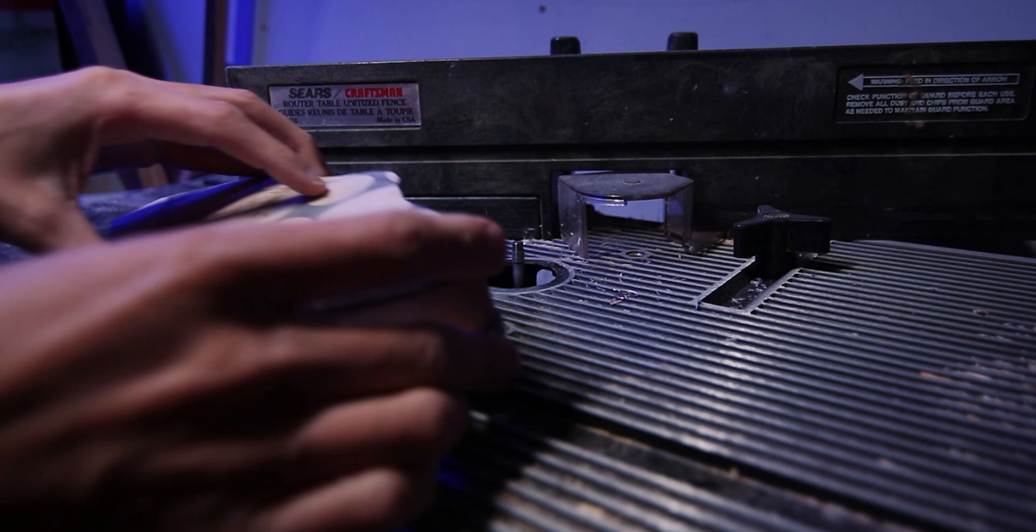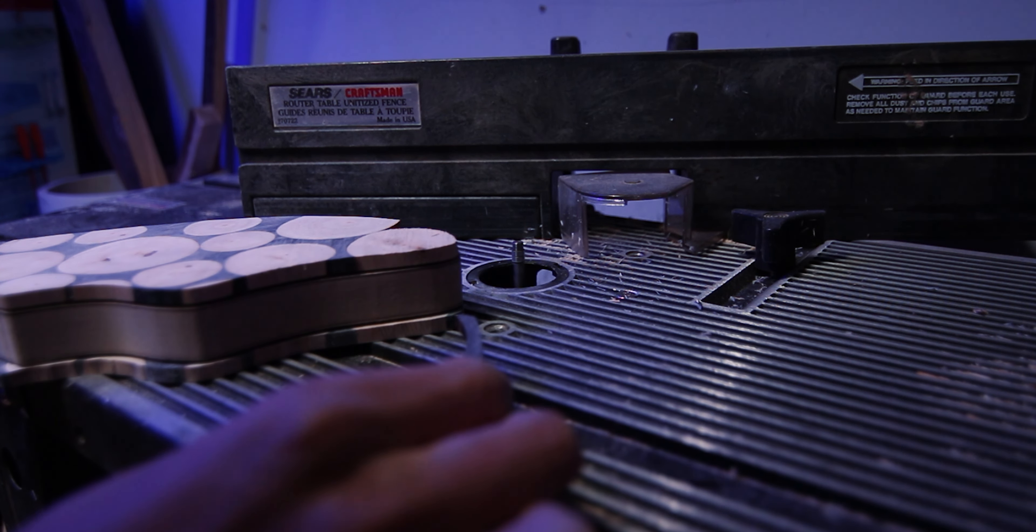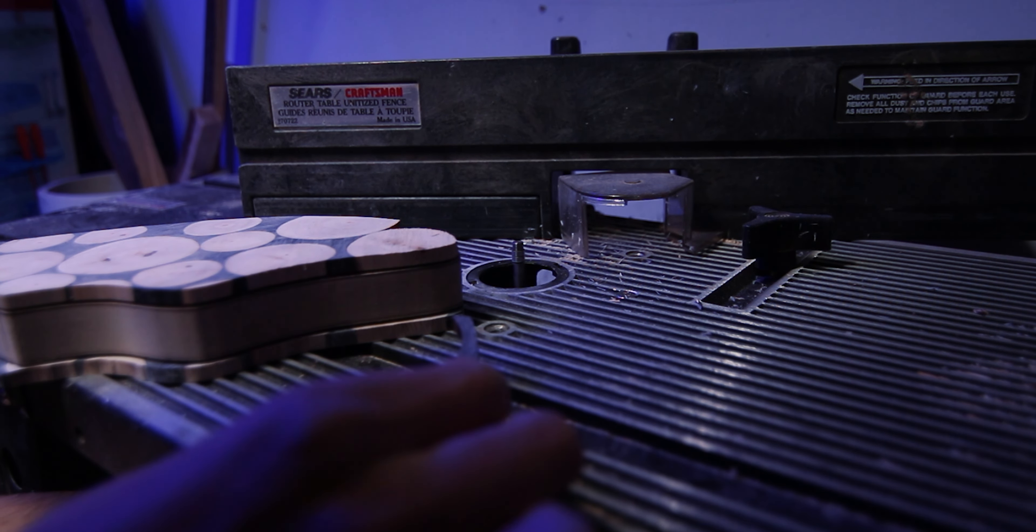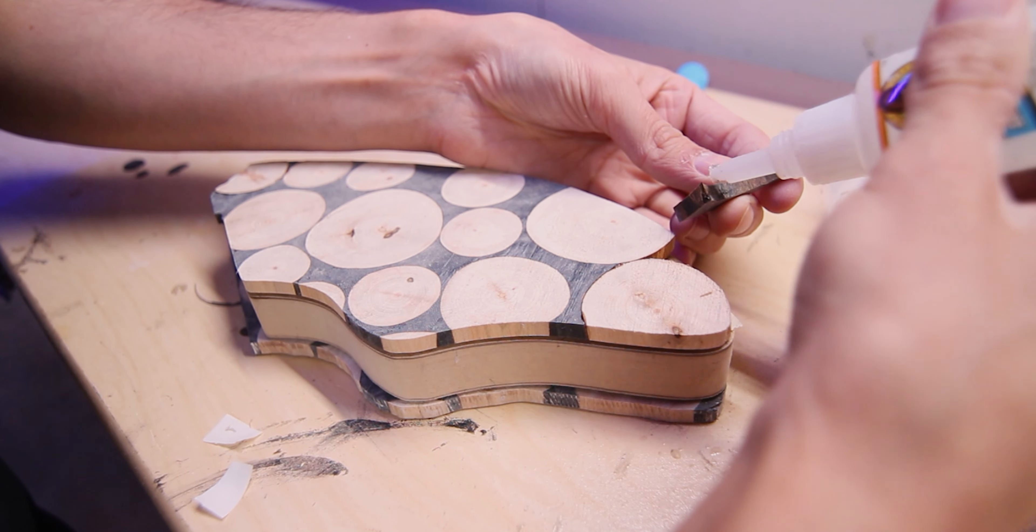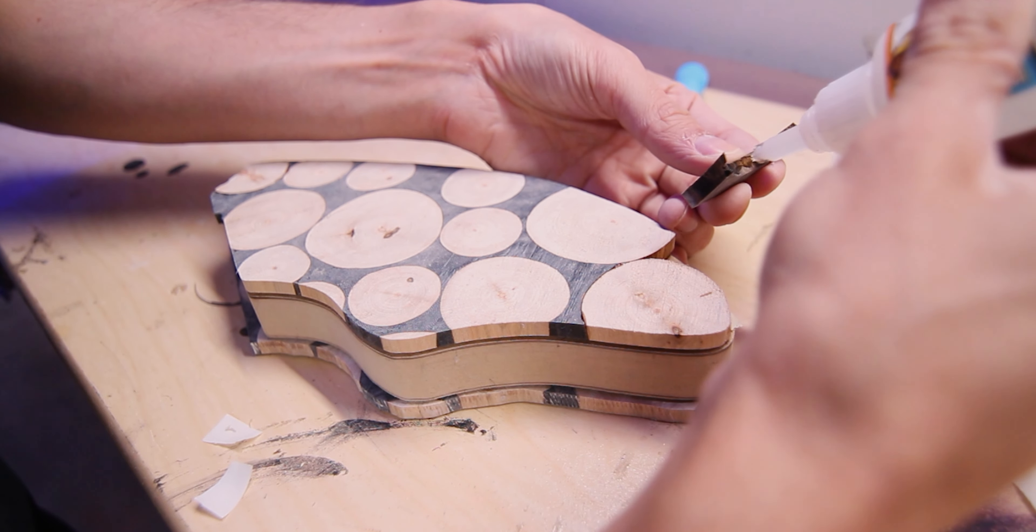One way I've been speeding up getting my fin panels to the final shape is using the router with a spiral trim bit. I'm going to attach my fin panels to my MDF template with some double sided tape and then I'll take these over to the router table to finish cutting them out.